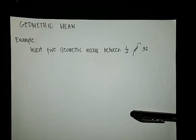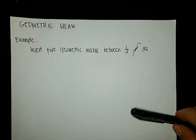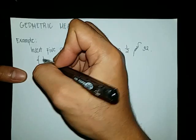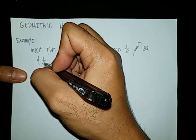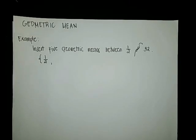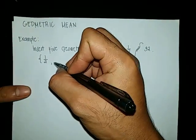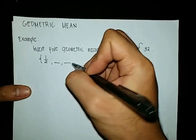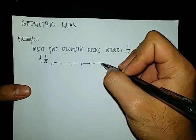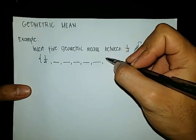For example, insert 5 geometric means between 1/2 and 32. Basically, our geometric sequence must look like this. Our first term is 1/2. Then we insert 5 terms — positions 1, 2, 3, 4, and 5. Then we have the last term which is 32.